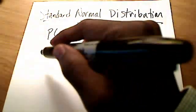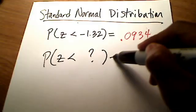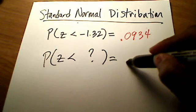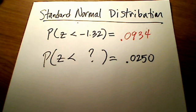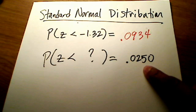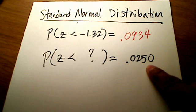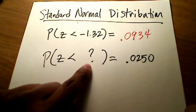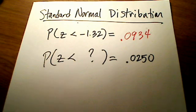What if this time I give you the probability and ask you what the corresponding z-score is? If I asked you to find the z-score that corresponds to .0250, do you see that you're given the probability this time? I'm telling you what the area under the curve is, but I'm not telling you what the z-score is — that's what we have to find. What's also very important is the less than symbol, pointing to the left.